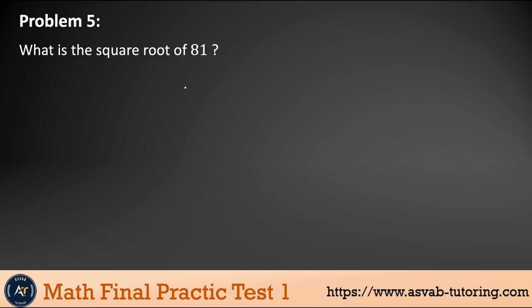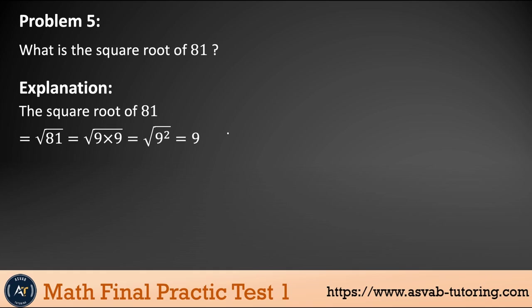Problem 5: What is the square root of 81? The square root of 81 is simply 9, because a number multiplied by itself gives the square root of that number — nine times nine is 81. It may get a little harder in the actual test, but you will see this type of problem. The answer is 9.